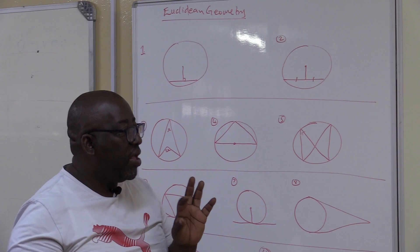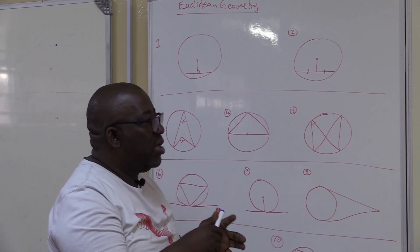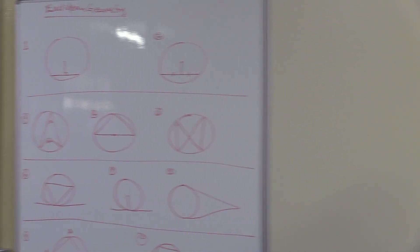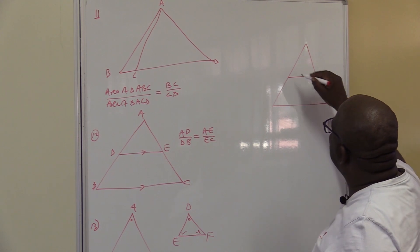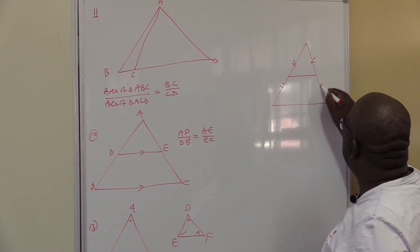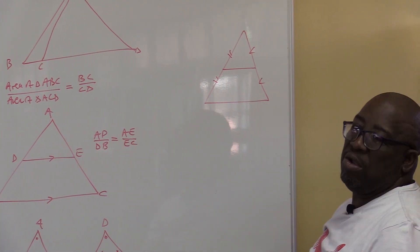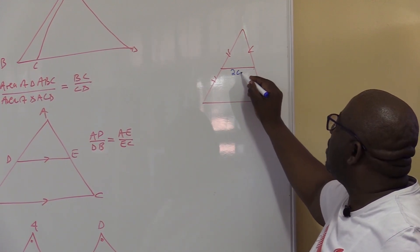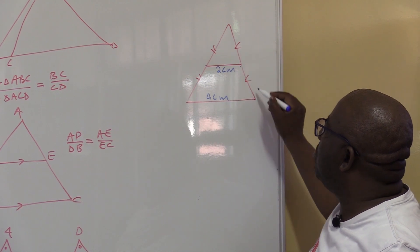There are about 13 theorems that you need to understand, including the Grade 10 theorem that talks about the midpoint. The midpoint theorem says: if a line is drawn from one side to another, and this part is equal to that part on both sides, then this line is a midpoint of that line. This theorem says this distance will be half of that distance. For example, if this is 2 centimeters, this will be 4 centimeters.